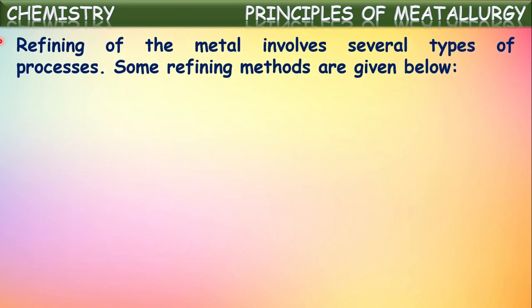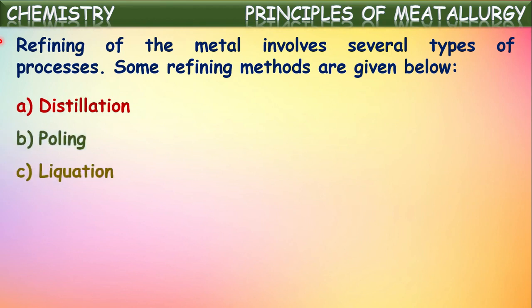Refining of the metal involves several types of processes. Some common refining methods are: distillation, poling, liquation, and electrolysis. These techniques are used for purification of the crude metal obtained from its ore, because when it is extracted, some amount of ore might be left over along with the metal, and some other metals may also be present. That process of removing them is called refining.